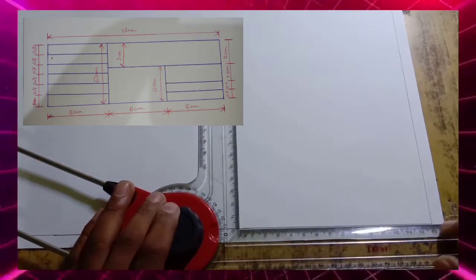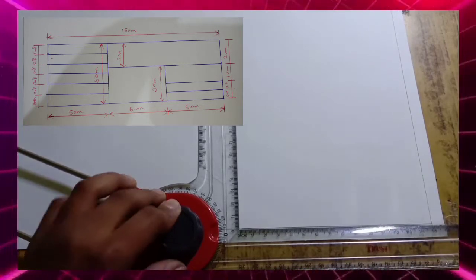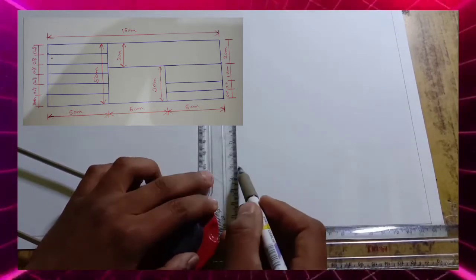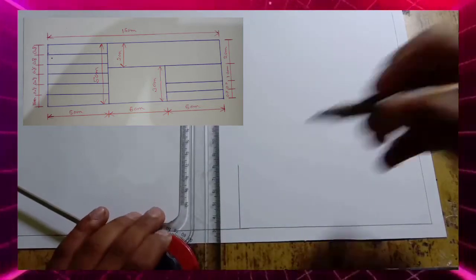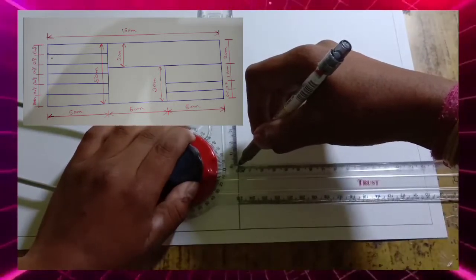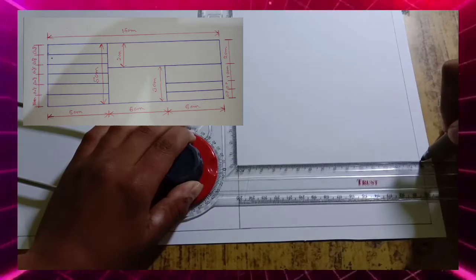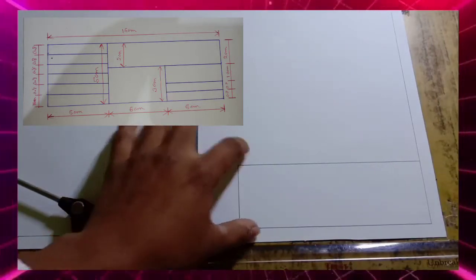Take 15 centimeters from this point and mark the line of 5 centimeters from the upside. Then take from here, this line. The box of the title box is ready.